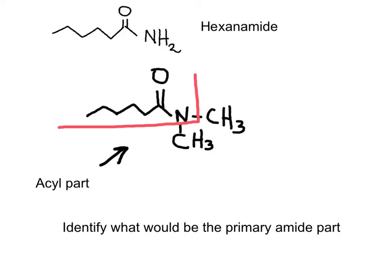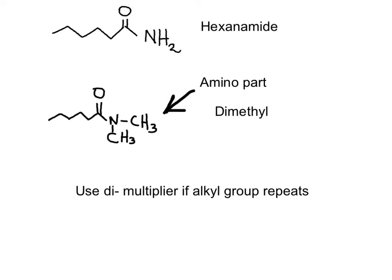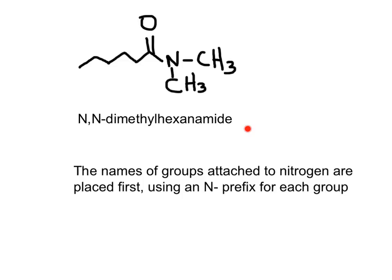The recommendation is to first identify what the primary amide name would be if you had an NH₂ present. Then look at the names of the substituents on the nitrogen. Because we now have two alkyl groups bonded to the same nitrogen, we use the multiplier — so this one is N,N-dimethylhexanamide.